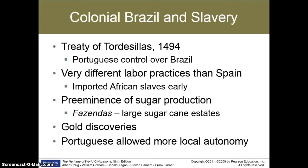We cannot overlook the situation that took place in Brazil. The Treaty of Tordesillas gave the Portuguese control over Brazil, and the Portuguese established large sugarcane estates and were also involved in the mining of gold. Incidentally, Brazil was one of the major importers of slaves from West Africa, and the slave trade lasted in Brazil until the year 1888.